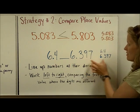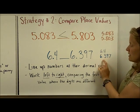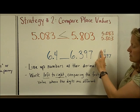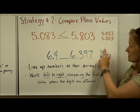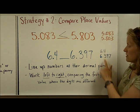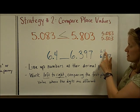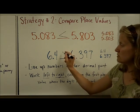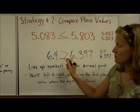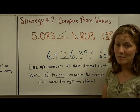Same thing in the next example — I've rewritten the problem vertically. In the ones place, they're the same. In the tenths place, four is greater than three, so six and four-tenths is the greater number.